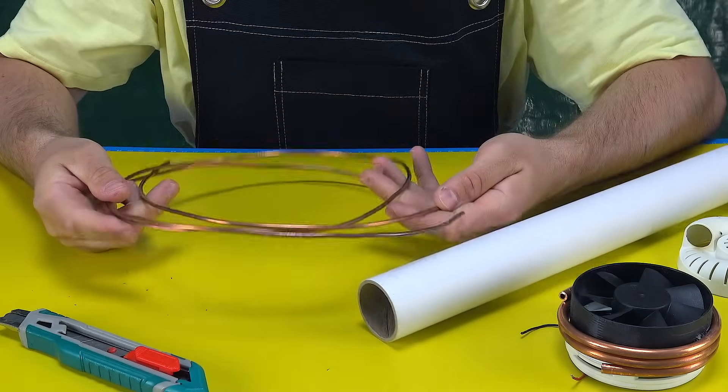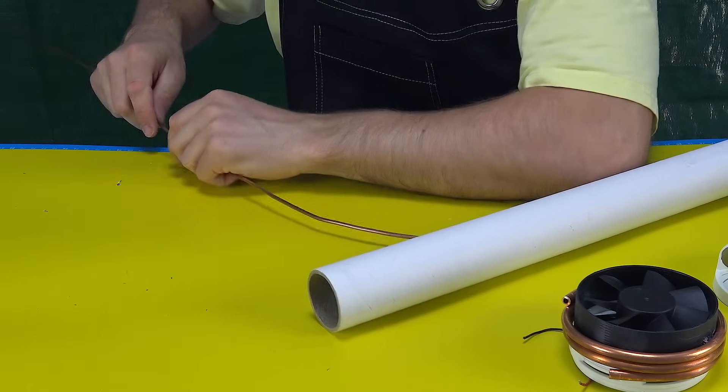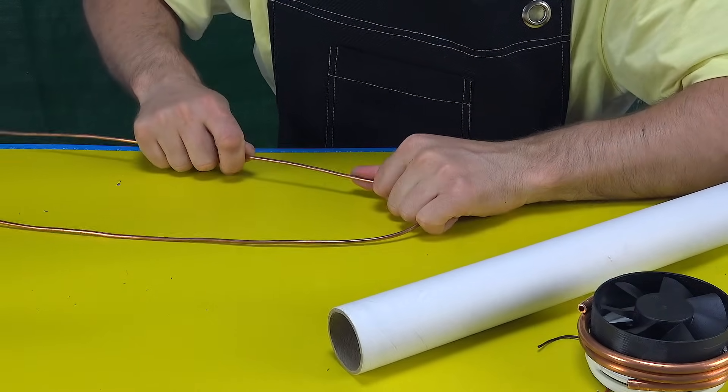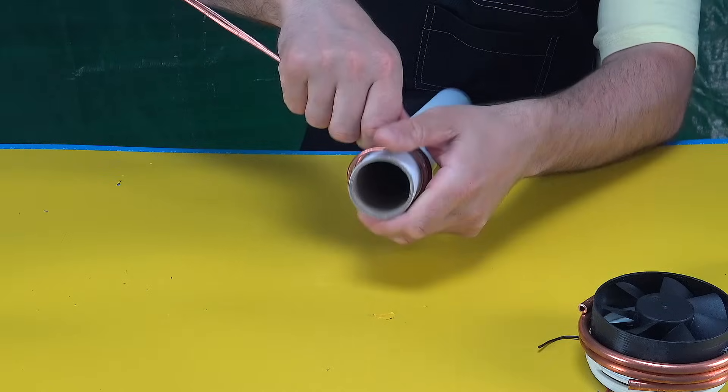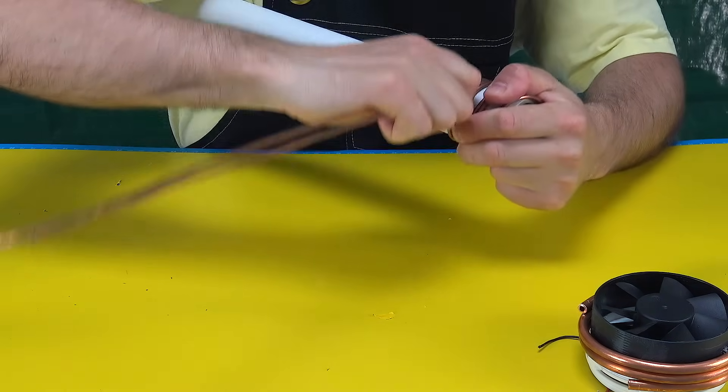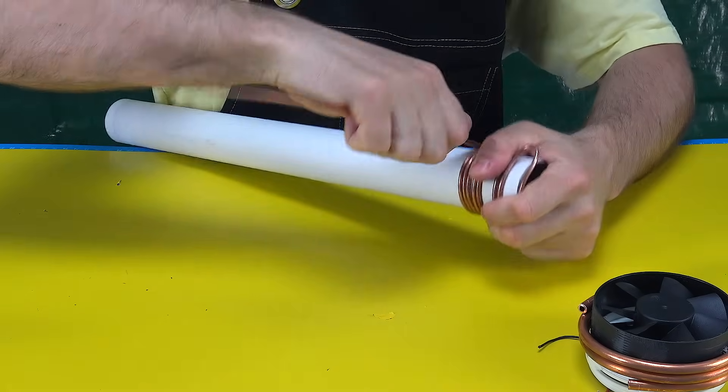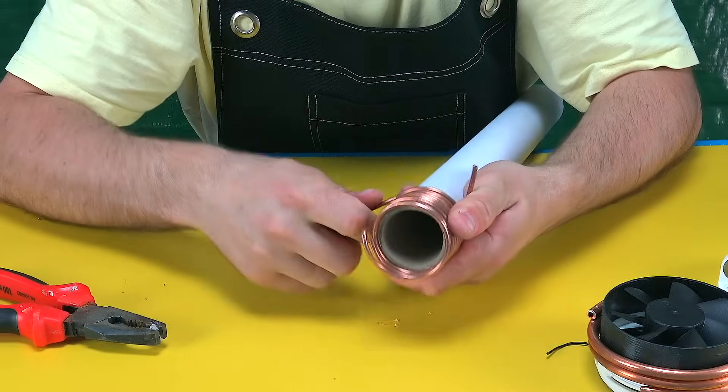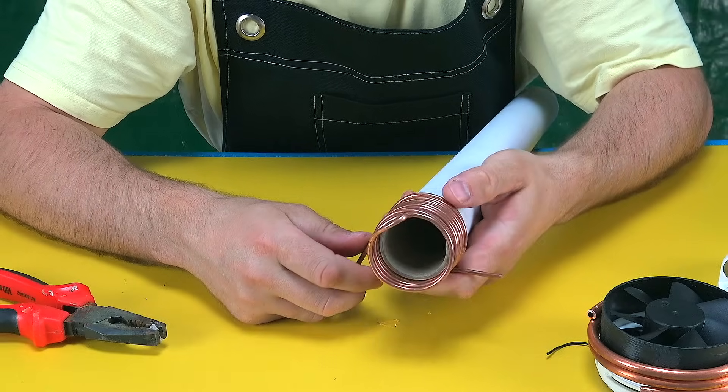Besides the condenser, the air conditioning system also has a very important part: the evaporator. Its job is a bit different. The evaporator absorbs heat from the air inside the room to cool it down. One key difference is that the copper tubing for the evaporator is usually about half the diameter of the condenser's tubing. This is because the refrigerant evaporates inside the evaporator, cooling the air, which requires a larger surface area for heat exchange and proper pressure inside the tubing.